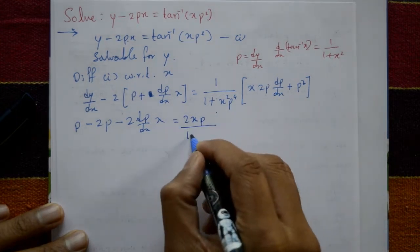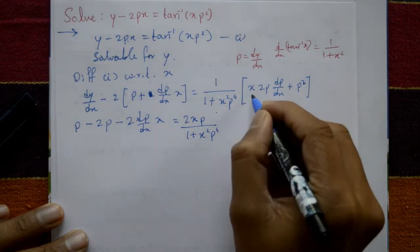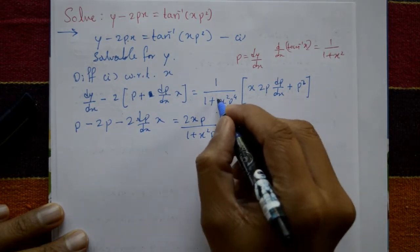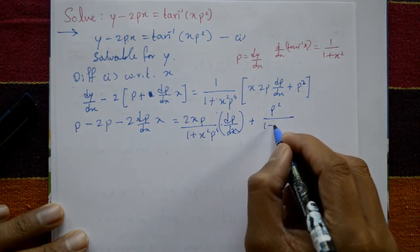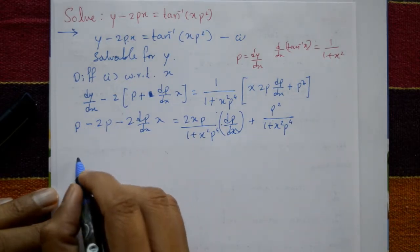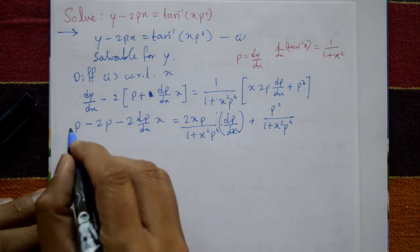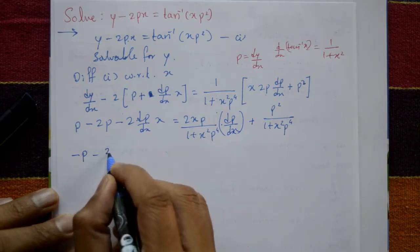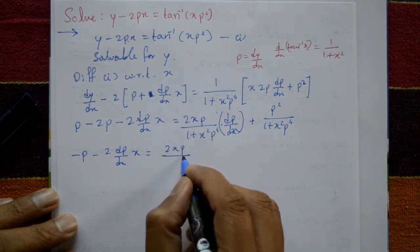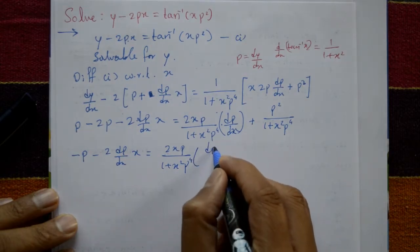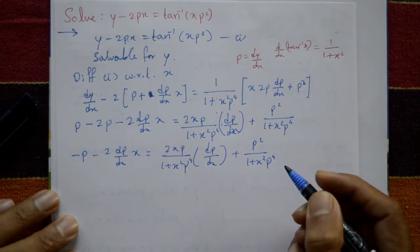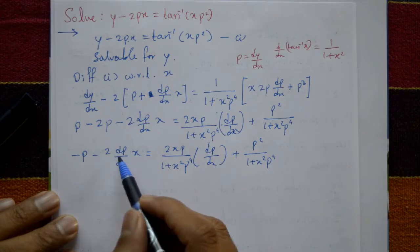Opening the bracket on the right-hand side, we get 2xp divided by 1 plus x squared p raised to 4 into dp/dx, plus p squared upon 1 plus x squared p raised to 4. On the left, we simplify: p minus p gives zero, and we have minus 2x dp/dx remaining.